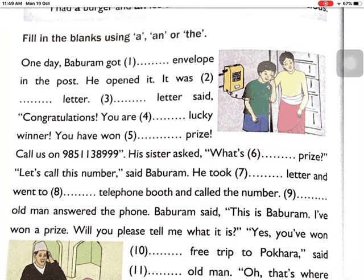'Call us on 985-1138-999.' Number six: His sister asked, 'What's ___ prize?' Prize was already introduced in number five, so this is the second time: 'What's the prize?' Number seven: 'He took ___ letter.' The letter was described already, so: 'the letter.' He went to ___ telephone booth. Telephone booth was not discussed before, so: 'a telephone booth.'